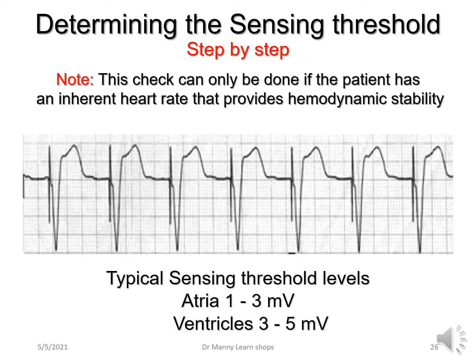The next step is determining the sensing threshold, which is a step-by-step process that is a little more complex. However, this can only be done if the patient is hemodynamically stable — meaning they must have an inherent heart rate providing a normal blood pressure reflected by a normal cardiac output. Typical sensing threshold levels in the atria are one to three millivolts, and in the ventricles, three to five millivolts.